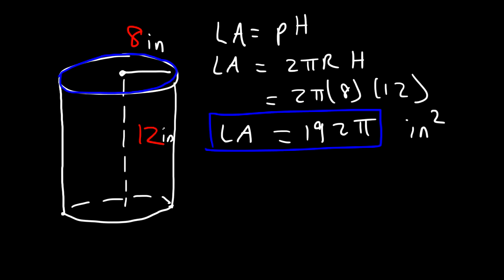Now let's calculate the total surface area. The surface area is the area of the base plus the lateral area. Now the area of the base is basically the area of a circle, and the area of a circle is πr².